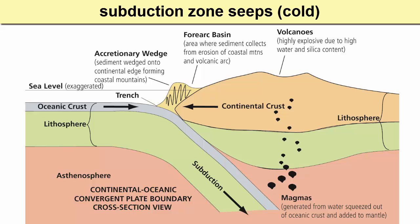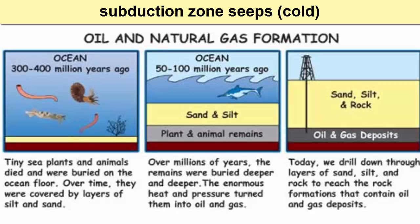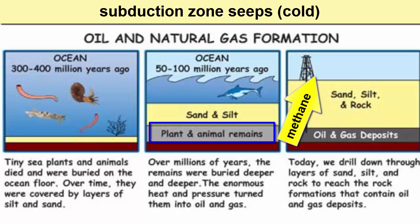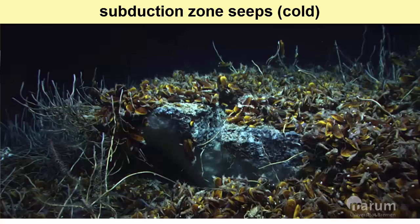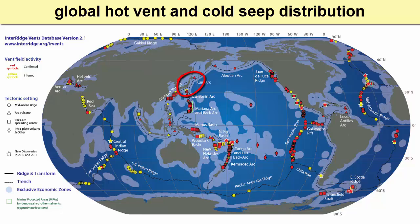Subduction zone seeps occur within trenches and form as methane gas seeps up cracks in the rocks. Methane forms during decomposition, especially when rocks have been buried with no oxygen. This gas is low density, so it rises up cracks as they form. In areas where cracks concentrate, there can be large amounts of seeping methane gas and thus large communities of organisms basing their food web on chemosynthesis. Subduction zone seeps have been found along the Japan Trench, Peru-Chile Trench, and just offshore of Oregon along the Cascadia subduction zone.